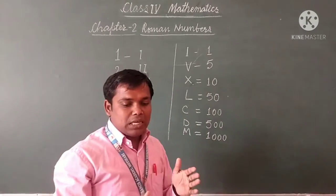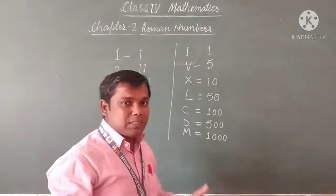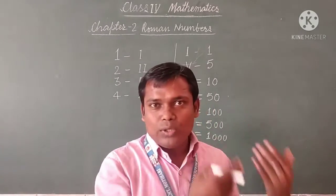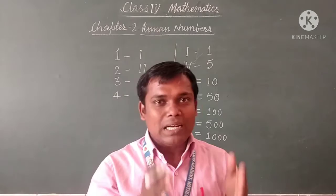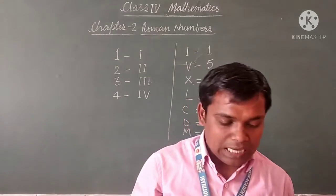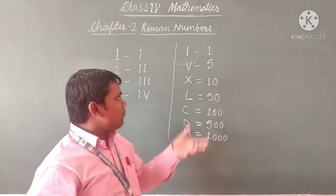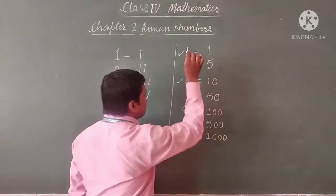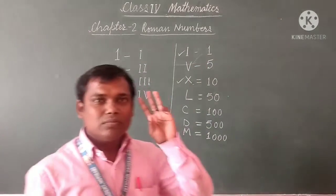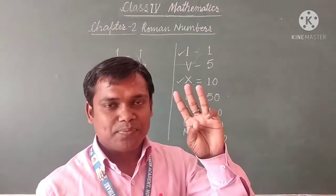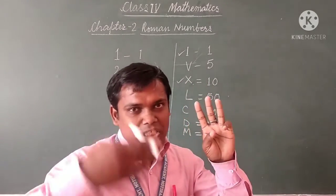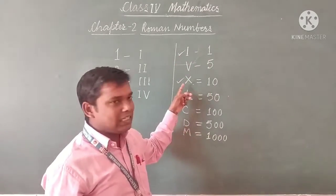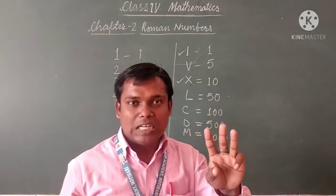To write Roman numbers we use these symbols, but we have to follow some rules. There are some rules when we are going to write any Roman number. The first rule is that we repeat I and X a maximum of 3 times.